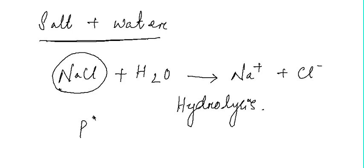When NaCl undergoes hydrolysis, the pH of the resulting solution is equal to 7, which means the salt solution of NaCl is neutral. But there are some other salts with different pH behavior.